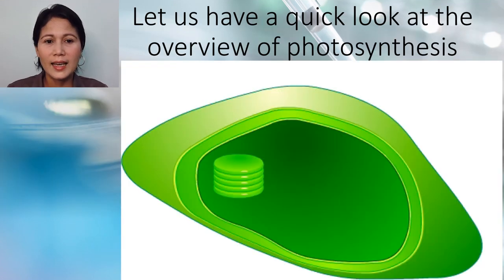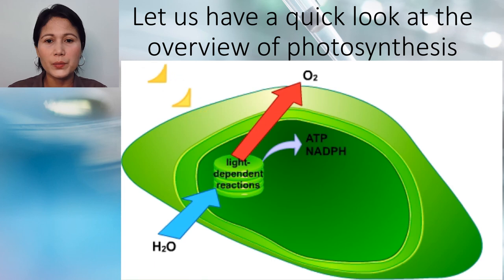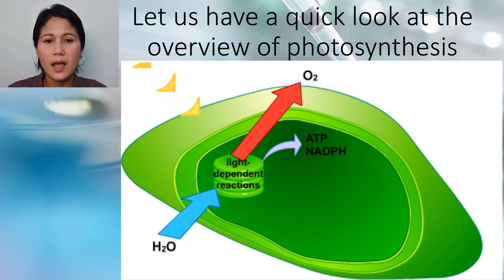Now let us have a quick look at photosynthesis. This is an overview of photosynthesis. The light-dependent reactions split water and produce ATP and NADPH. Oxygen is a byproduct of these reactions.